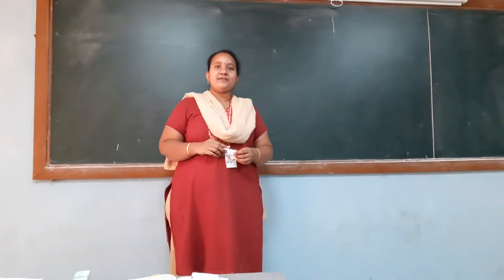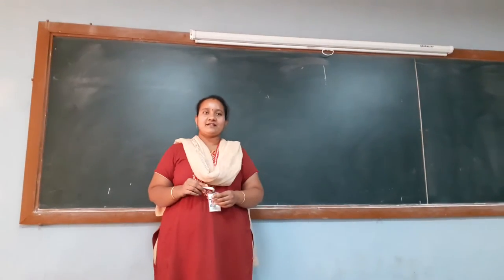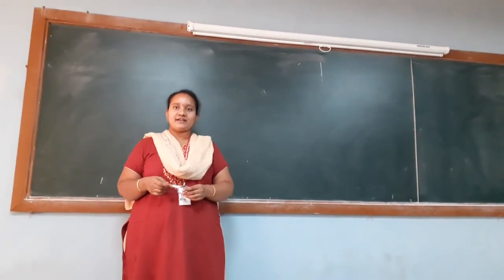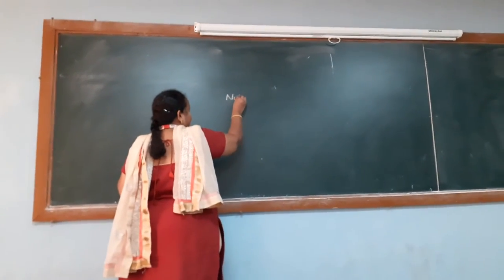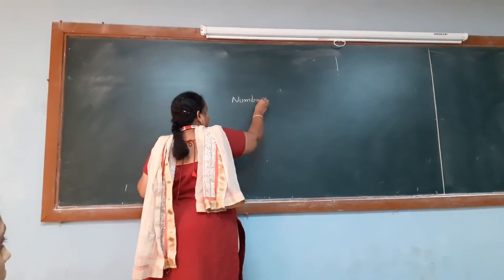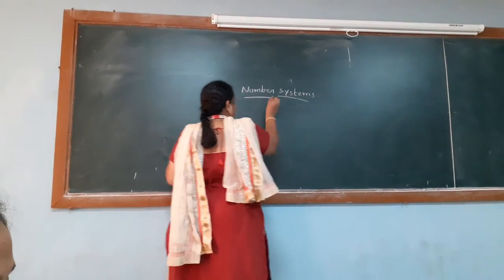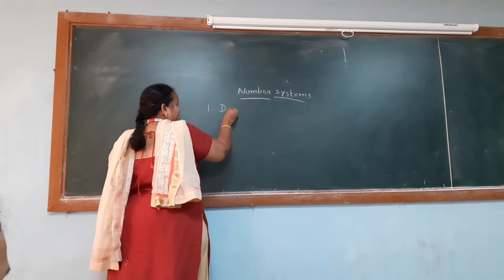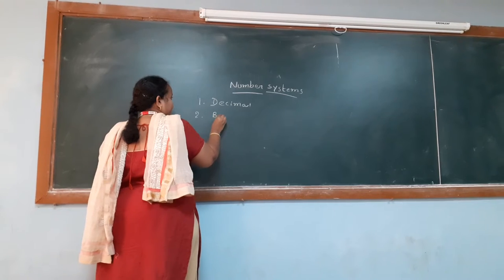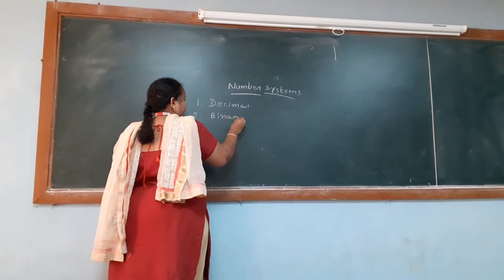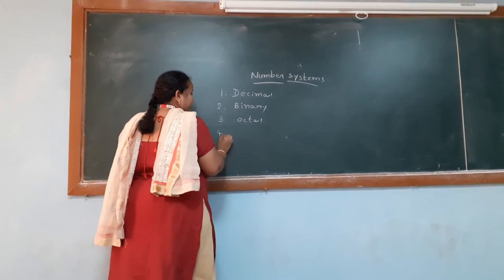Hello, this is Sreeja. In this video, I will explain the basics of number systems and conversions from one system to another. Basically, we have four types of number systems: the first one is decimal, second is binary, third one is octal, and the fourth one is hexadecimal.